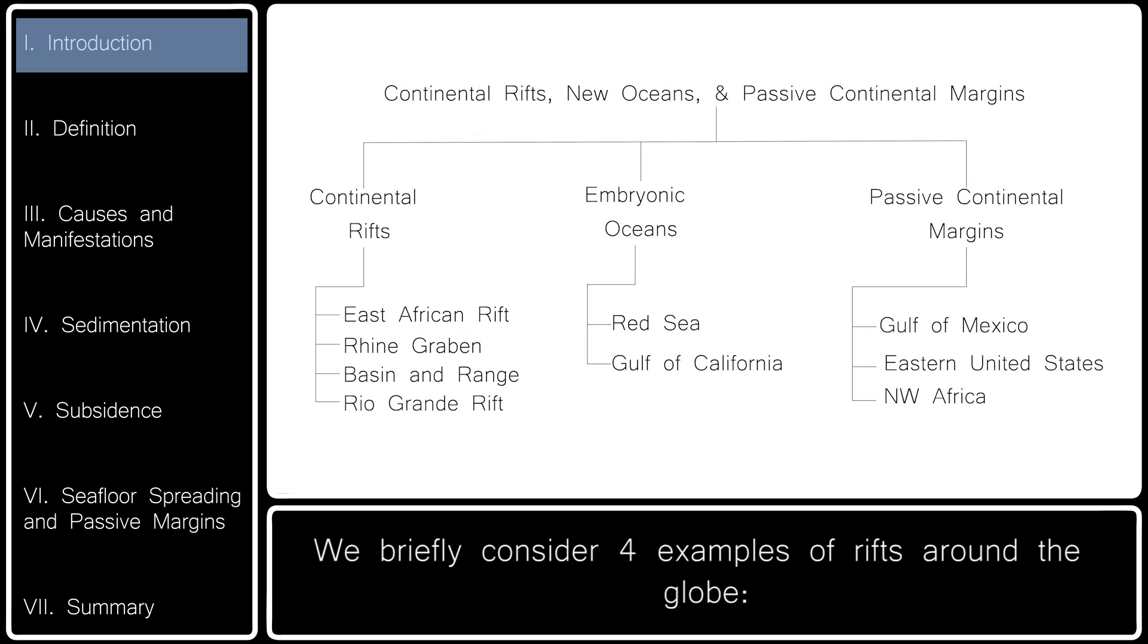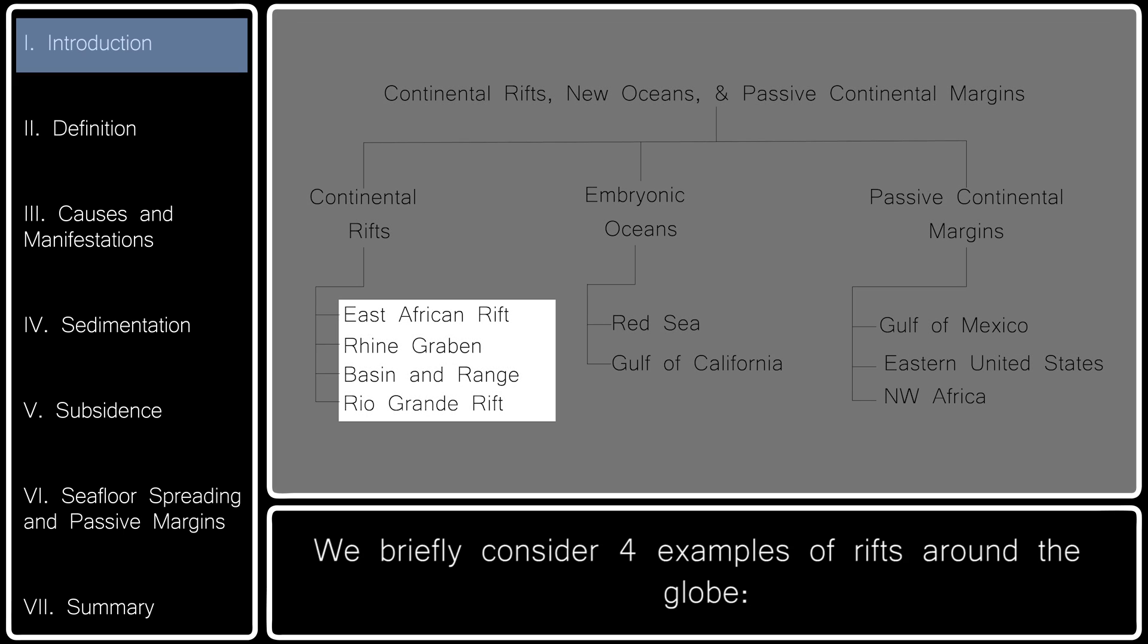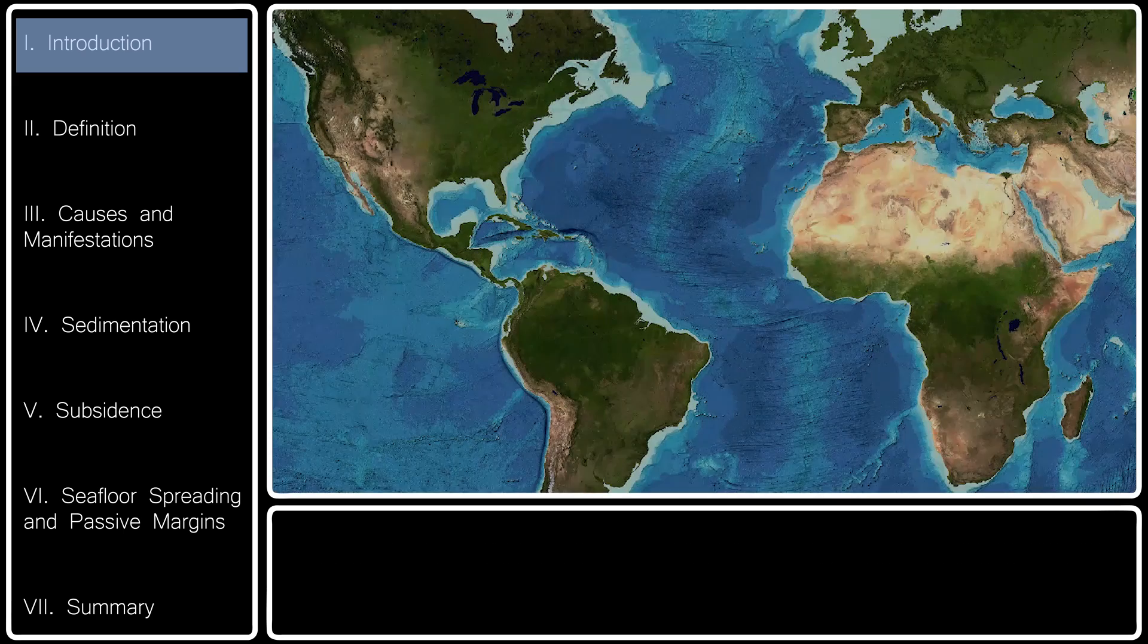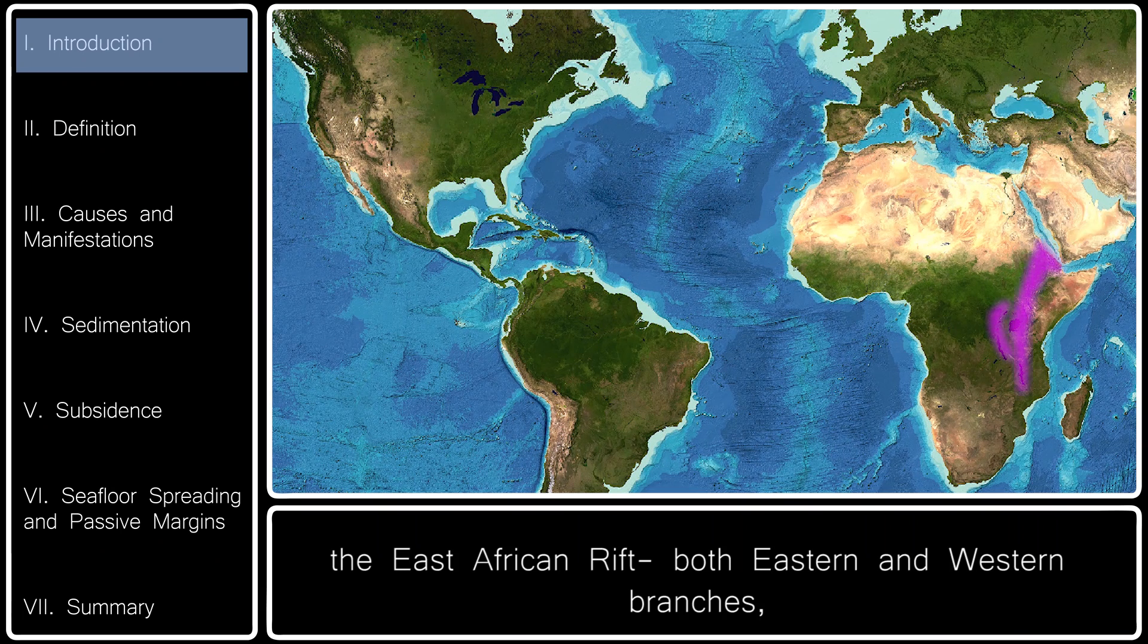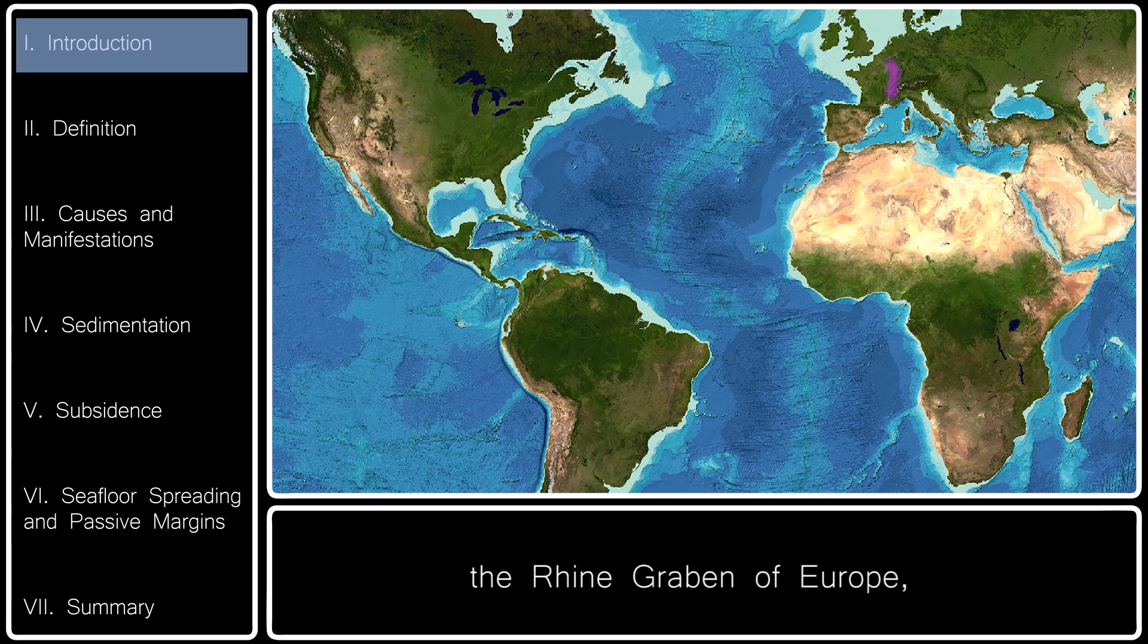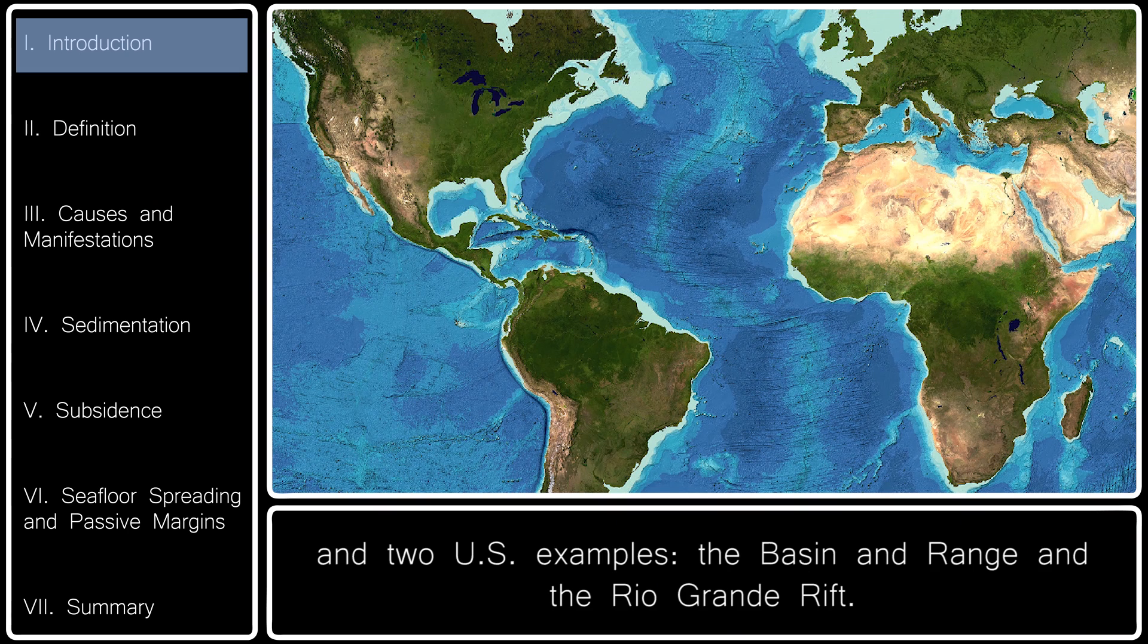We briefly consider four examples of rifts around the globe: the East African Rift, both eastern and western branches, the Rhine Graben of Europe, and two U.S. examples, the Basin and Range and the Rio Grande Rift.